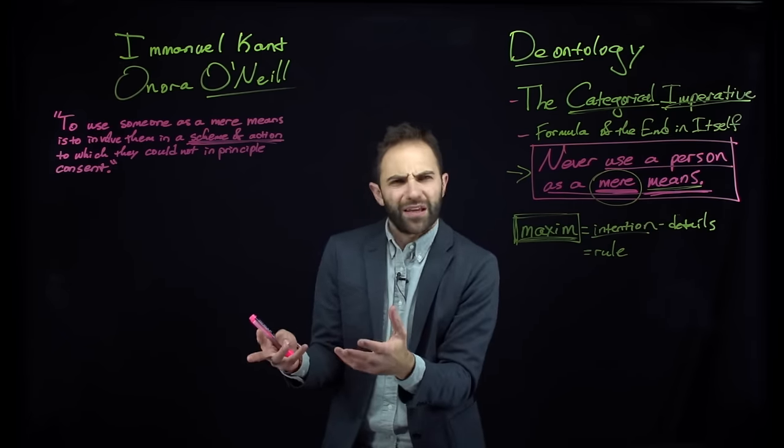According to deontology, you should never act on a maxim that everyone involved would not potentially or in principle agree to. That's surely the case in the sheriff example — the person you would frame could never consent to the action of framing someone for a crime. And the mob as well — they want justice, not a frame-up. So very few people could ever consent to this kind of action, and therefore deontology gets the result opposite to utilitarianism: the sheriff must not frame the innocent person.